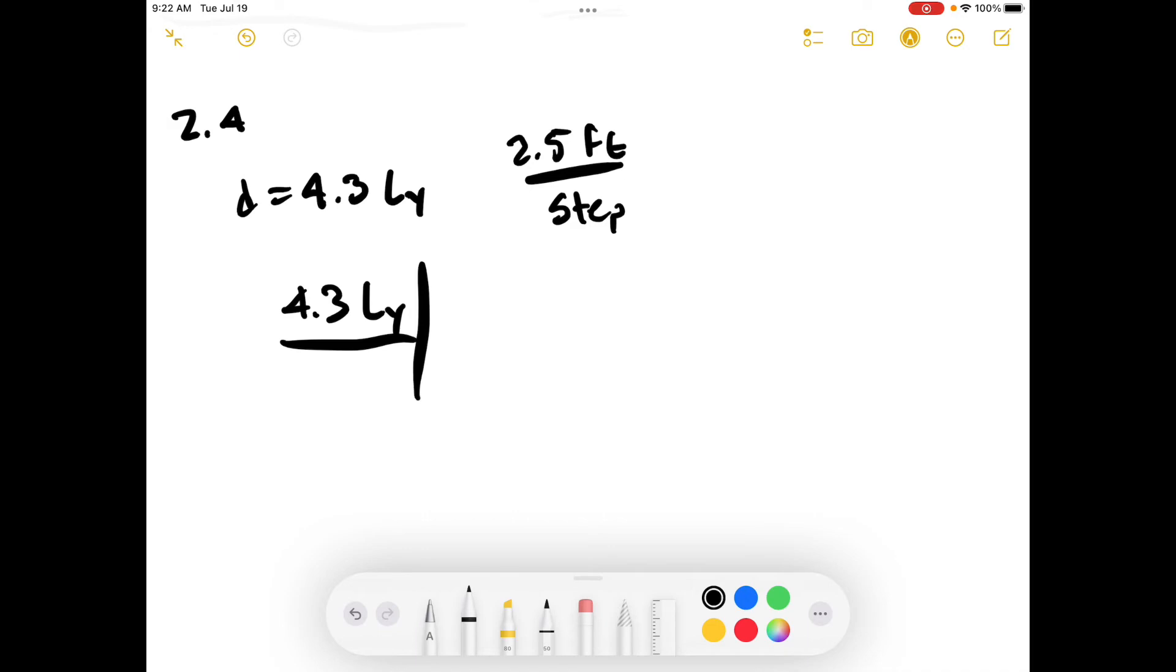Let's google that really quick, and we get 3.104 × 10^16 feet per light year. Then we have our 2.5 feet per step.